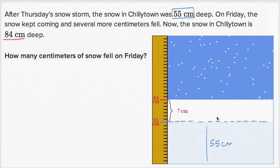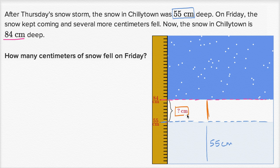This depth right over here is 55 centimeters. But the snow did not stop — it kept coming. Now the snow in Chiletown is 84 centimeters deep, which is this point right over here on the ruler. They want to know how many centimeters of snow fell on Friday — that's this amount right here, marked with a question mark.